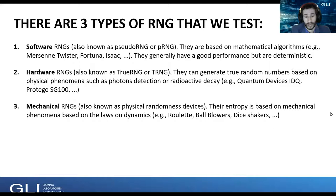Then there are hardware RNGs. These, we also call them true random number generators because their entropy is based on physical phenomena that are intended to be really random. So, for instance, photon detection, radioactive decay, and others. Maybe you've heard of quantum devices, IDQ, Protego SG100, and others.